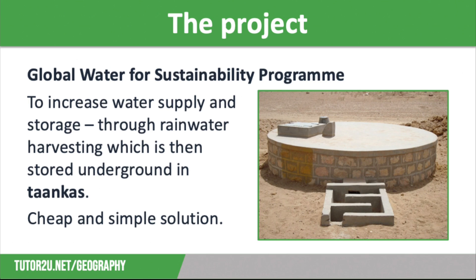To improve water security in the region, the Global Water for Sustainability Program was funded by the US Agency for International Development, with the aim of increasing water supply and storage and raising awareness of the need for water management amongst local communities in the Wackal River Basin. Local people are fully involved in this project and are supported by the charity. They are in charge of setting up the scheme and maintaining it, enabling them to improve water security and reduce their risk of water shortages in the future.